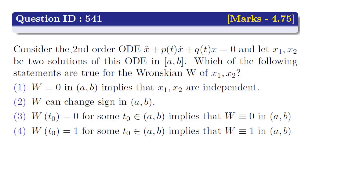The question is: consider the second order ordinary differential equation x double dot plus P(t) x dot plus Q(t) x equal to 0. Let x1, x2 be two solutions of this ODE in the closed interval [a, b]. Which of the following statements are true for the Wronskian W of x1, x2? Option 1: Wronskian is 0 in open interval (a, b) implies that x1, x2 are independent.